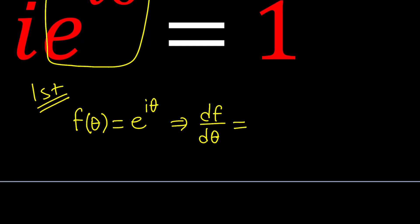If you differentiate e to the iθ, what are you going to get? You should be getting e to the iθ because the derivative of e to the power of something is always the same thing, multiplied by the derivative of the inside from the chain rule. The derivative of iθ would just be i. This is i times e to the iθ.